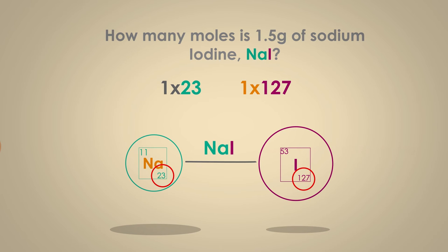Thus, the molecular mass of sodium iodide is 23 grams per mole plus 127 grams per mole, which is 150 grams per mole.